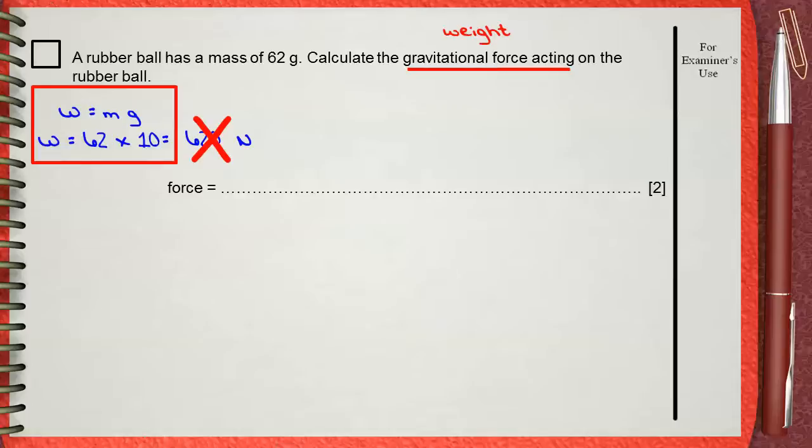The important thing here that you must take care of, is that the standard unit of mass is kilograms, not grams. This means that the 62 grams must be converted to the unit kilograms.